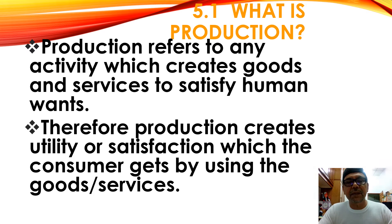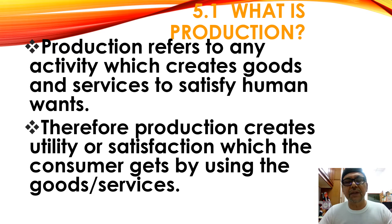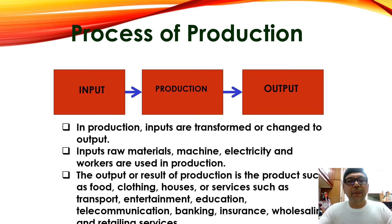Therefore production creates utility or satisfaction which the consumer gets by using the goods and services. So buy goods to eat, to consume, buy shirts to wear — all this utility. What is the process? First the input, then the production, then the output — the ready product, the ready goods.